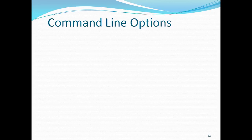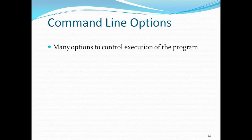If you want to see the warnings and messages when you execute or run your program, then we have to use a command line option. There are several command line options provided for Perl programming. Many options control execution of the programs. For example, minus w (i.e., -w) turns on the warnings.